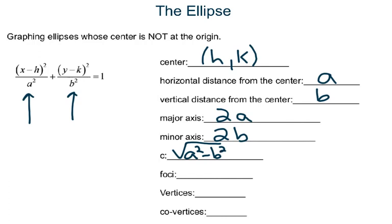And the foci: again, the one thing I said over and over is that a and c will always line up. So if you had to find the coordinates of the foci, the distance from the center is going to be c. Since they line up, if a is going left and right because it's underneath the x, so is c. So your foci is going to be (h ± c), and your y value is going to stay the same.